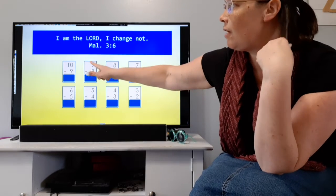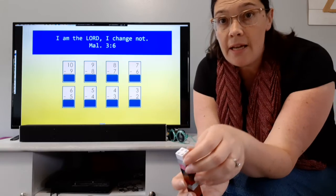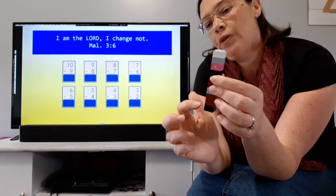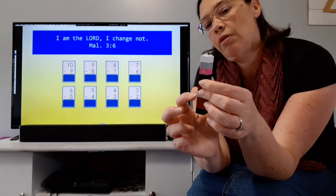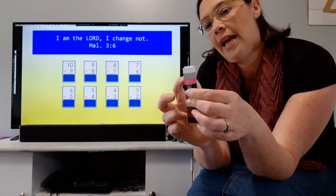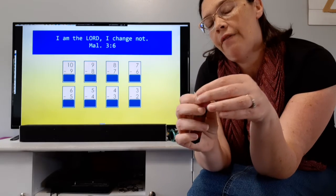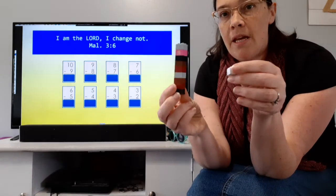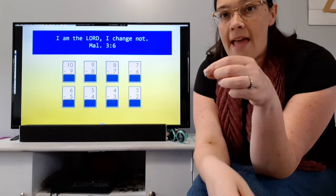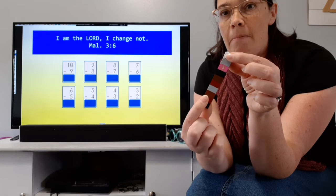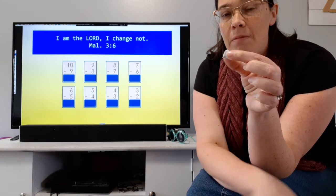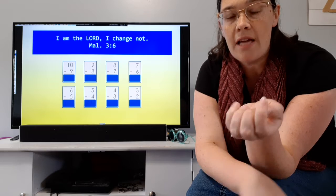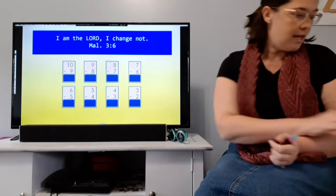Here we have 10 minus 9. If it's minus 9, that means we're going to take away: 1, 2, 3, 4, 5, 6, 7, 8, 9. I'm going to break off 9. So, I had 10, minus 9, I'm going to take those away. How many is left? 1. 10 minus 9 equals 1. Well, that seems pretty simple.